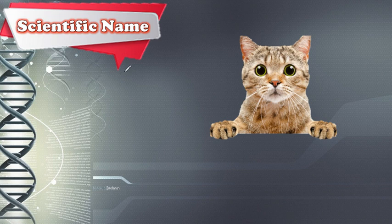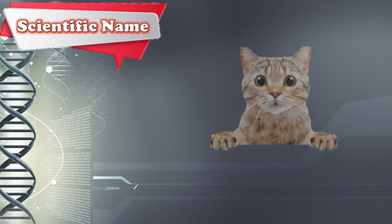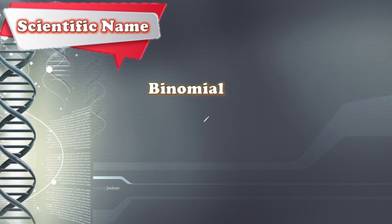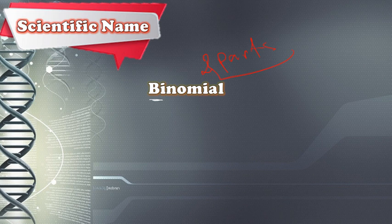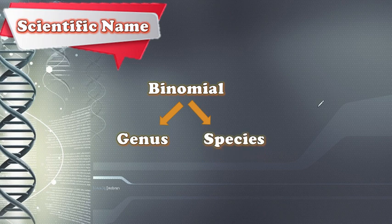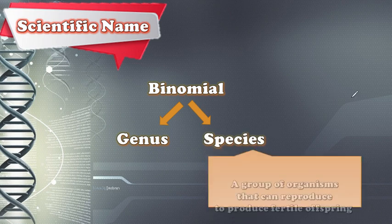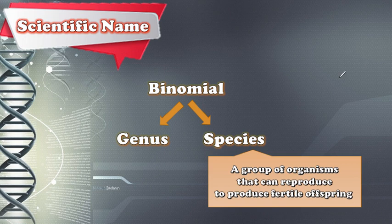So scientists came up with a solution: we should have a scientific name. The scientific name is binomial, meaning it has two parts — 'bi' means two. These two parts are the genus and the species. A species is a group of organisms which can reproduce to produce fertile offspring.